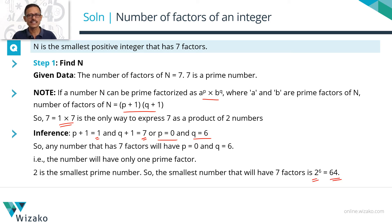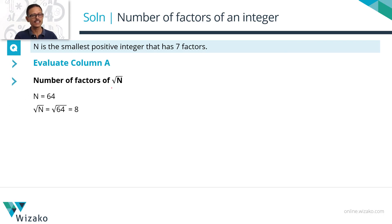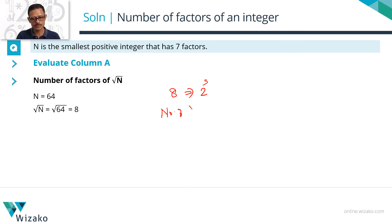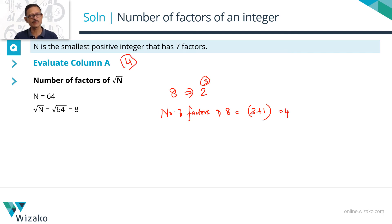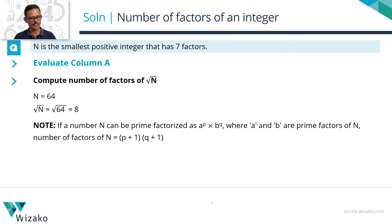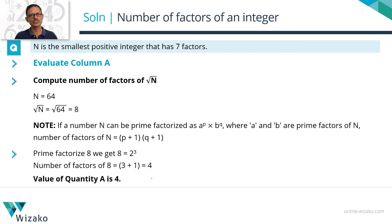Now that we have found N, it takes not much time to evaluate the two columns. Column A: number of factors of root N. N equals 64, so root N equals 8. Prime factorizing 8 gives 2 cubed. Number of factors of 8 equals 3 plus 1 equals 4. So the value of the quantity in column A is 4.